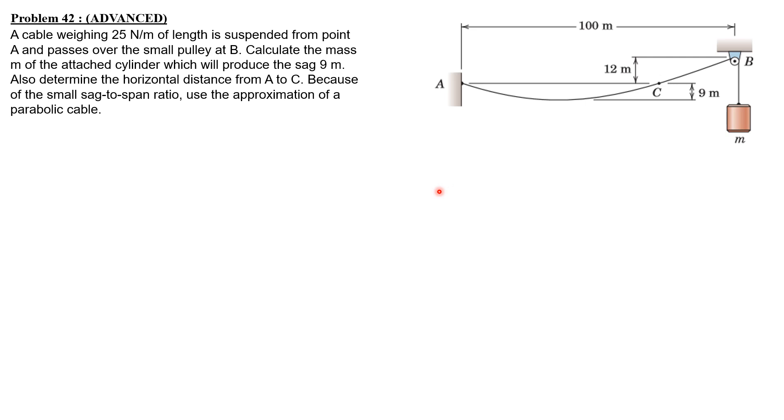Tension at B is equal to M times G. We have a symmetric portion of the cable, so this is the lowest point, which we will call X_A.